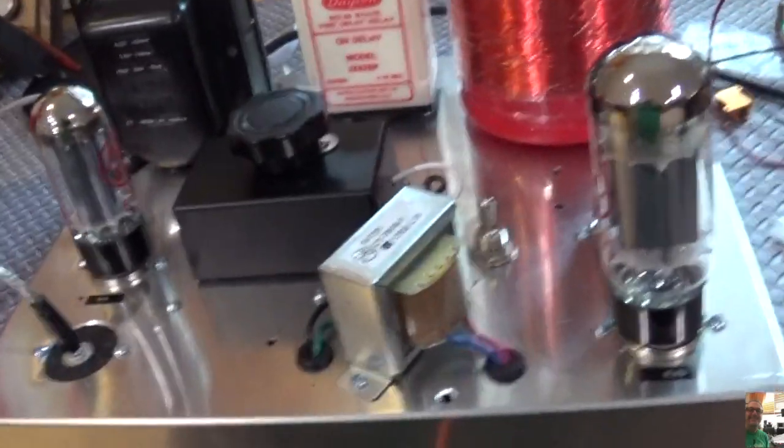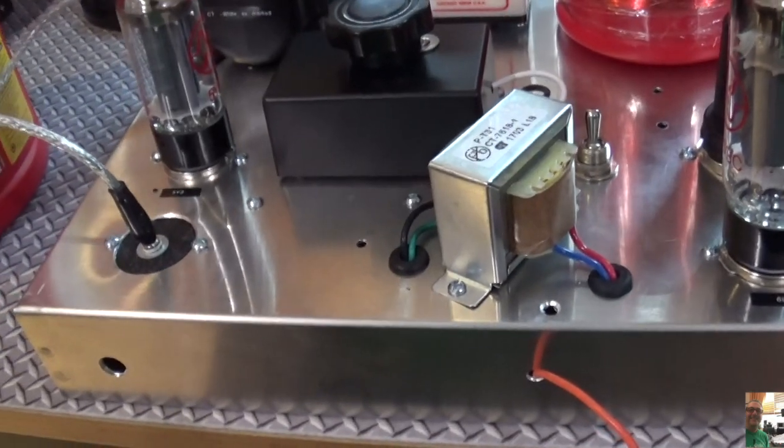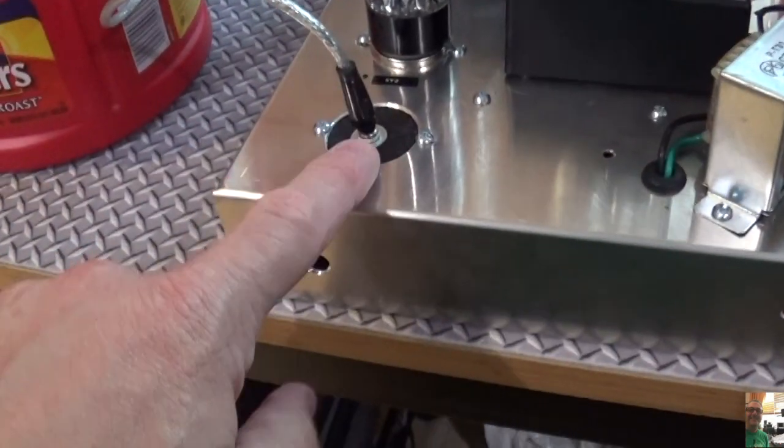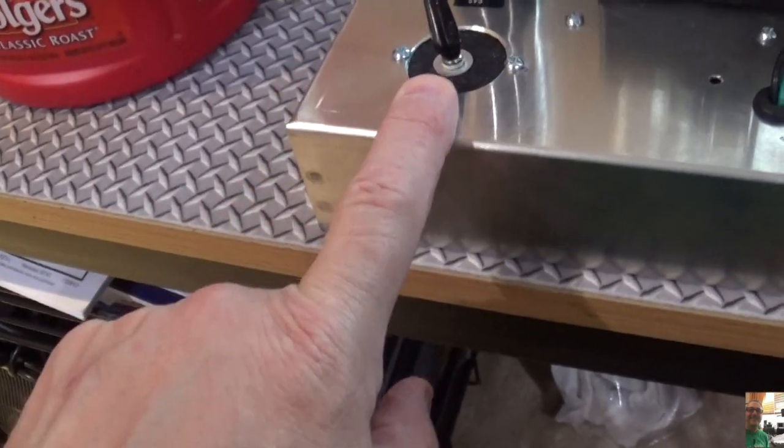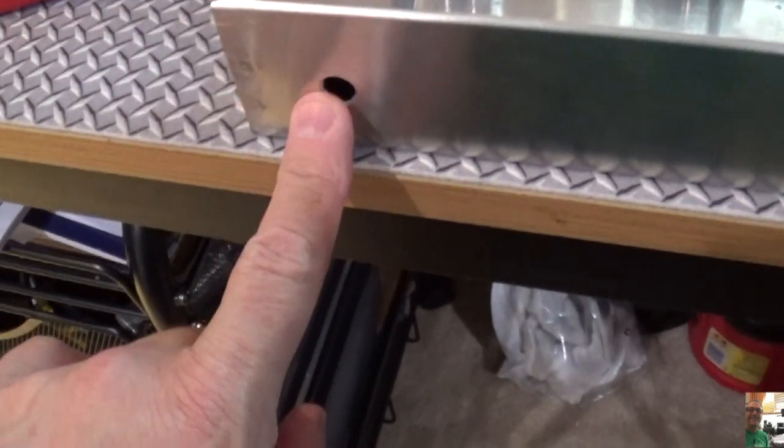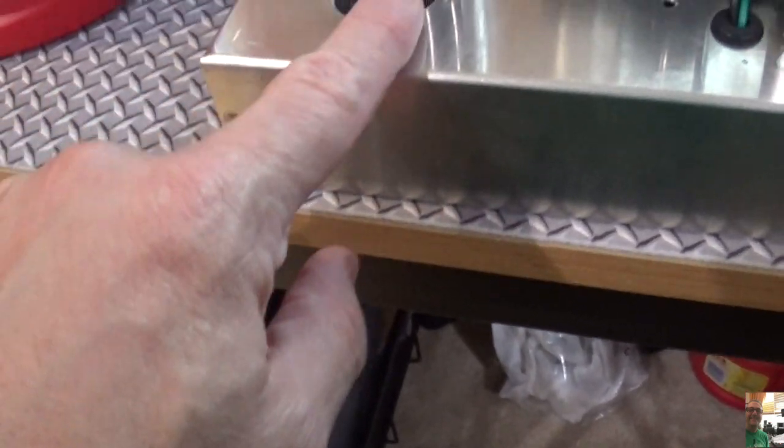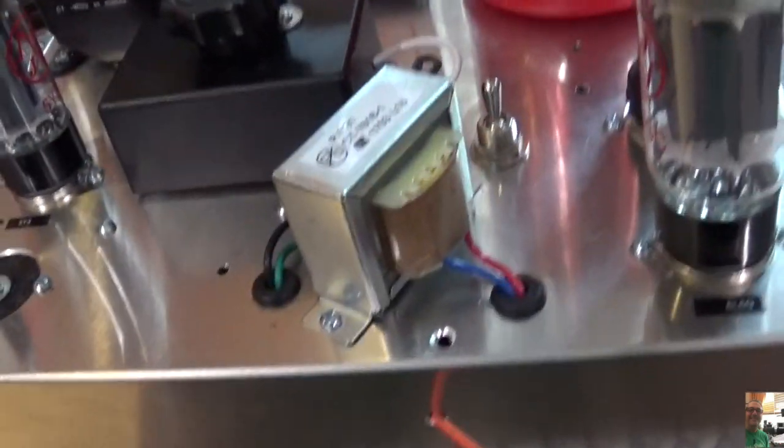But I want to get that 4K resistor connected in there and do that right. And I'm probably going to end up moving this input right here. I'll have to make that hole a little bit bigger. But that'll be a project for another day. It works fine where it is.